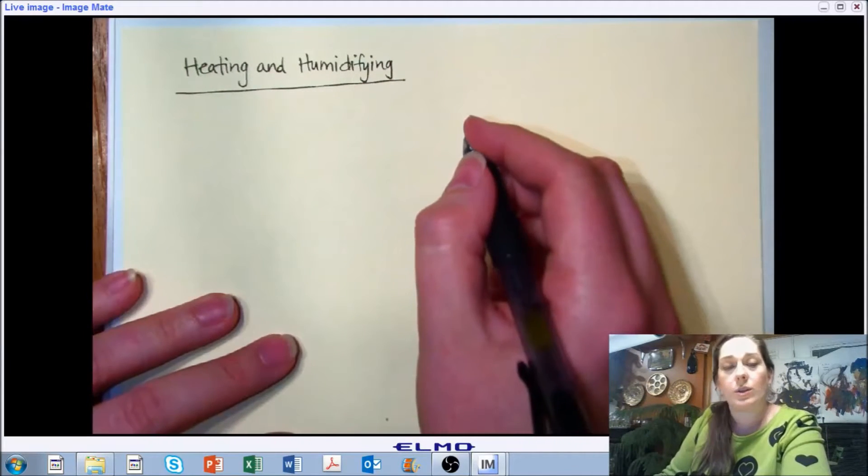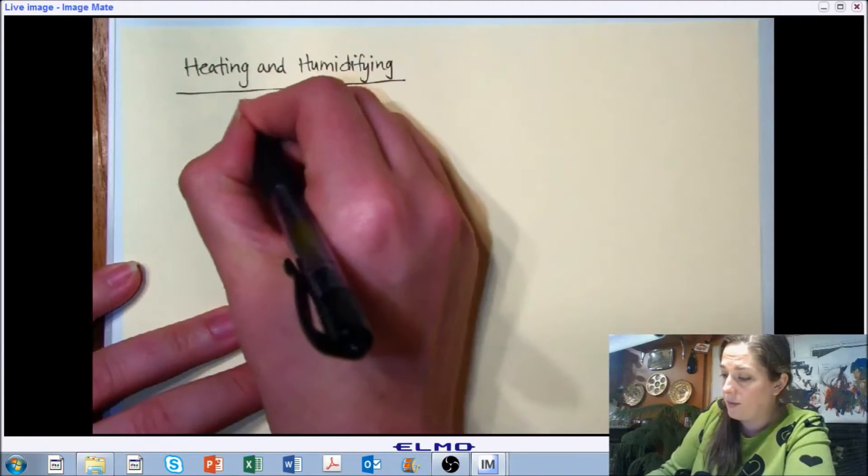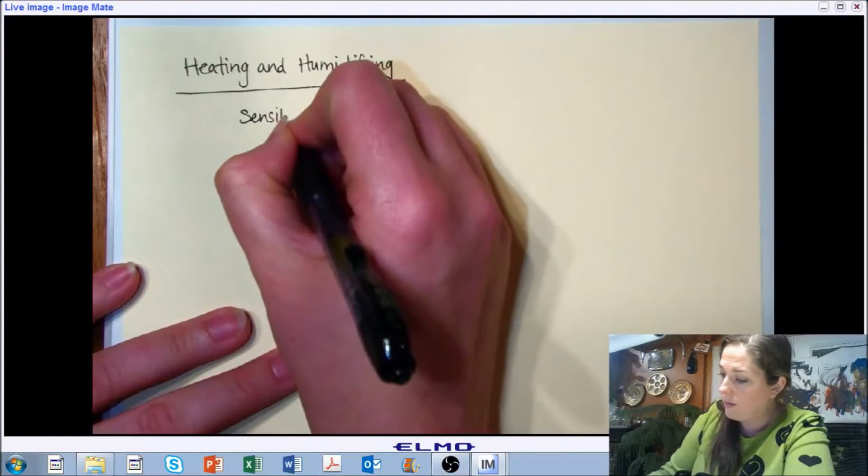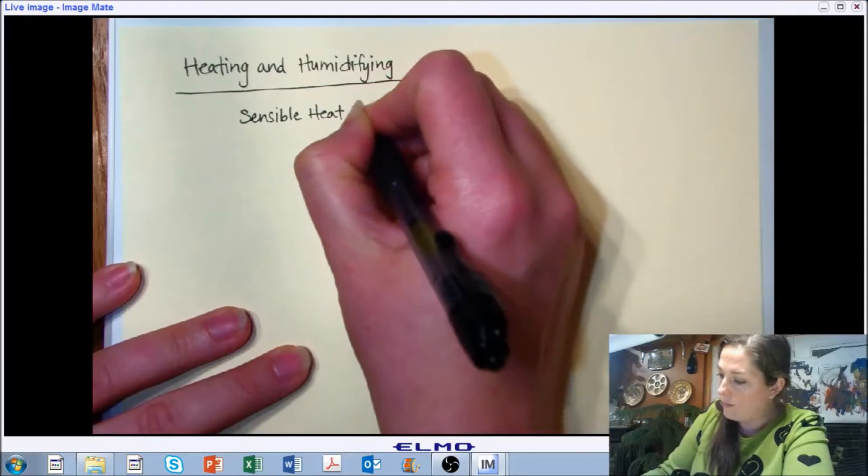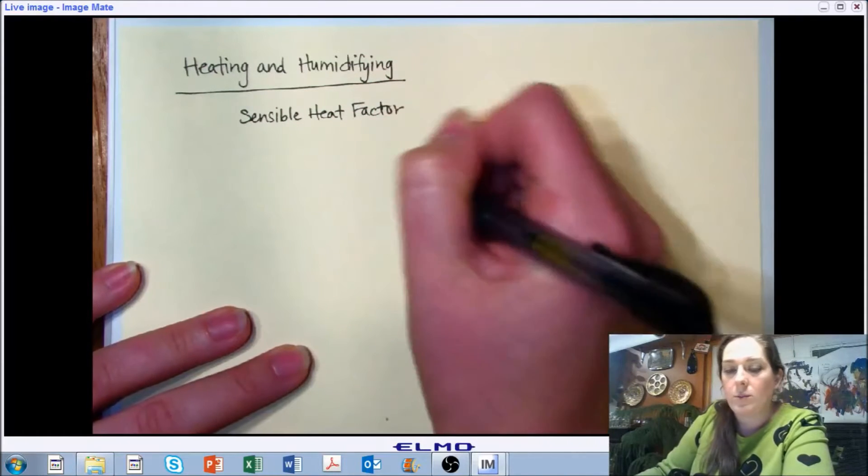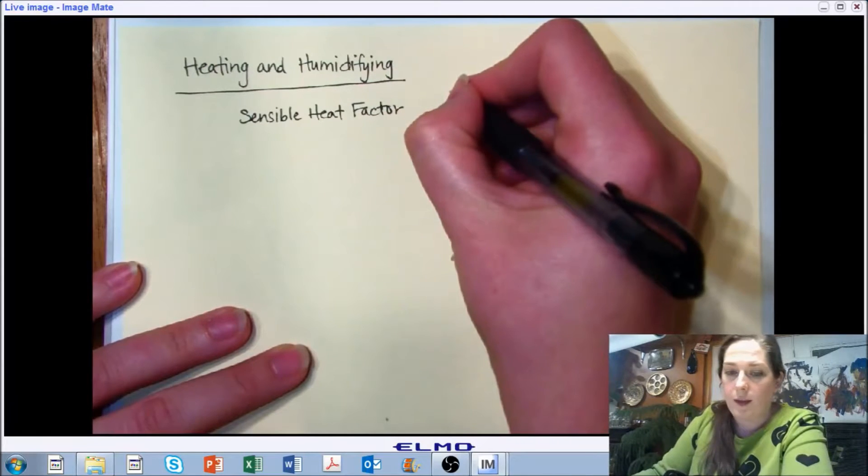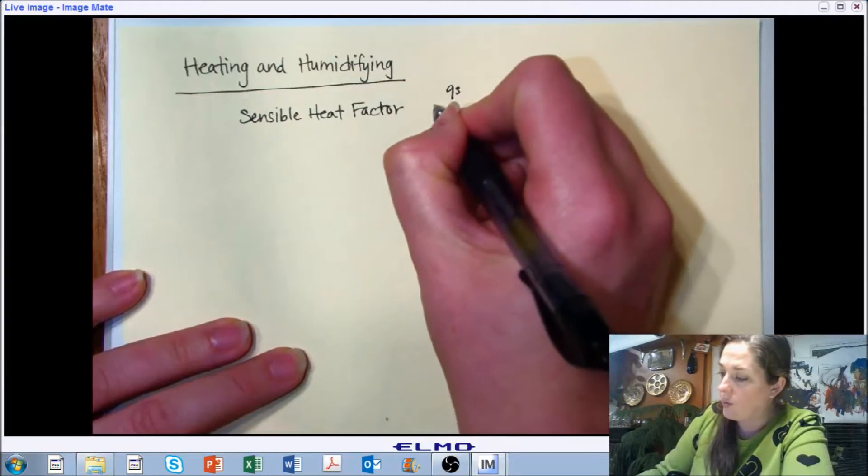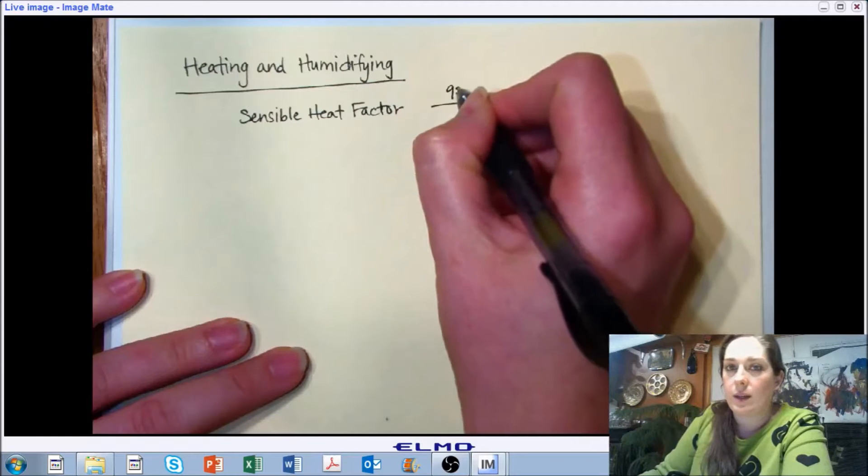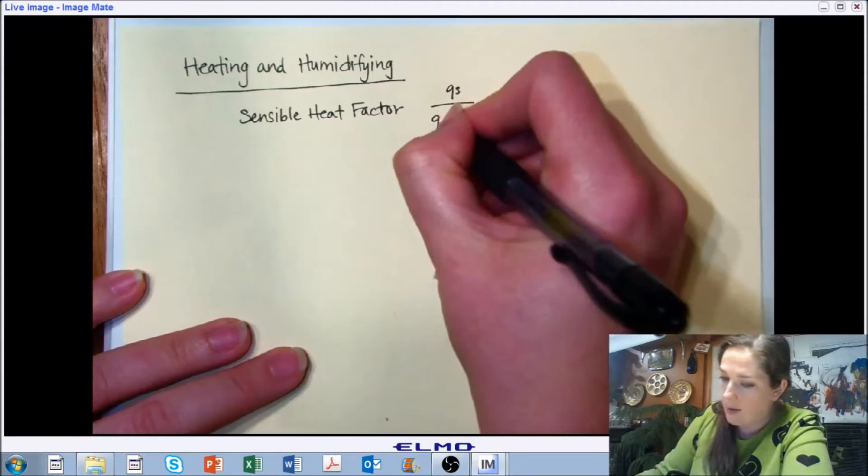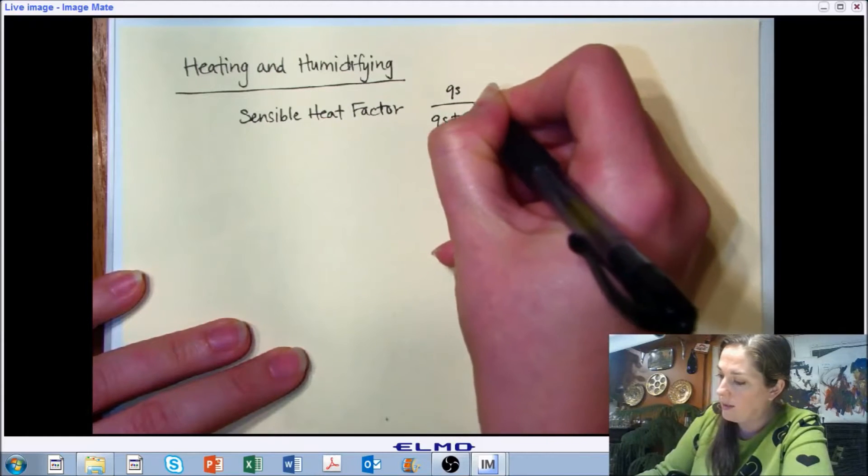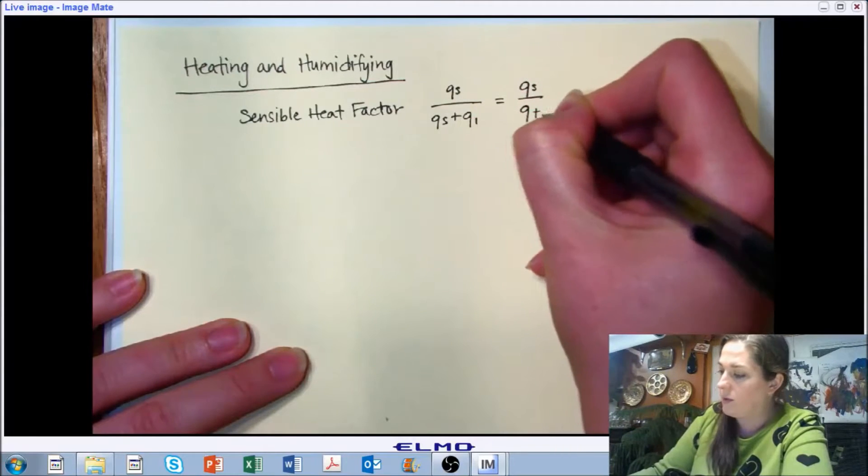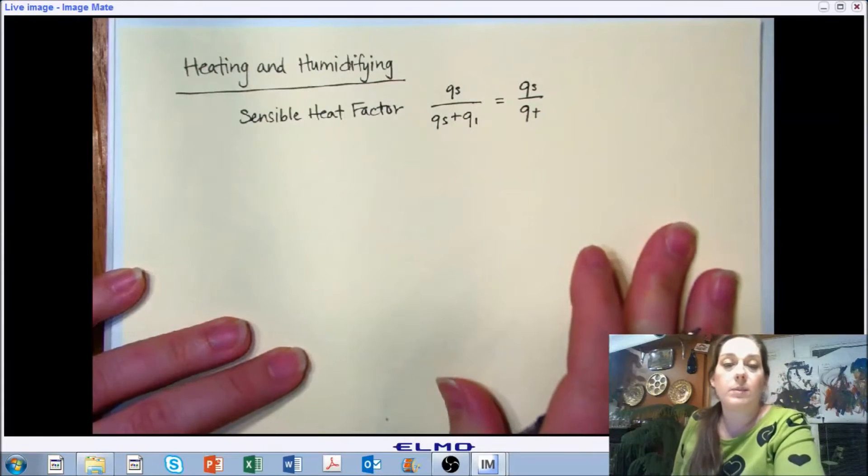Before we do too much with this, I want to introduce a new term. It is called sensible heat factor, and we're going to talk about this inside of heating and humidifying. Sensible heat factor is the relationship between your sensible and your latent and your total energy. So, the ratio between sensible and the sum of your sensible and latent, which is the same as the total energy. Qt is for total.